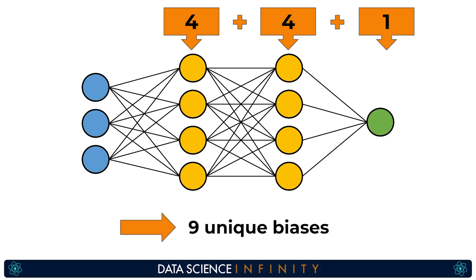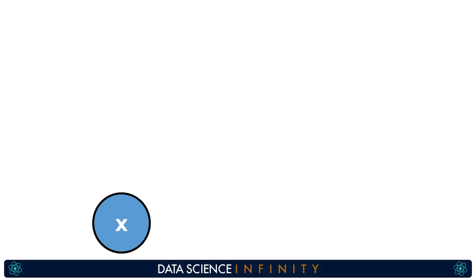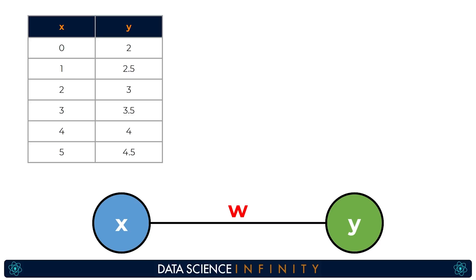To answer this let's start with the simplest possible network one with a single input neuron denoted by x and a single output neuron for our output value denoted by y. As these are connected there would be a unique weight value for this connection and you can see this is denoted by w. Cool so now we have the super simple architecture in place let's run through an example and to do this let's now add in some training data that we have.